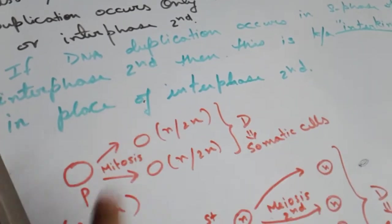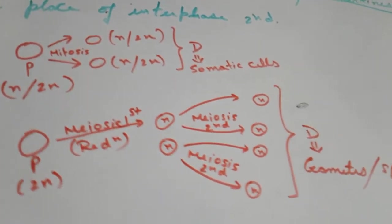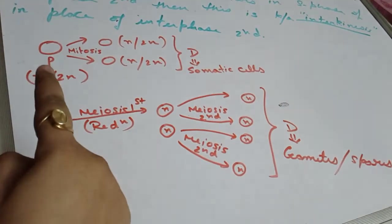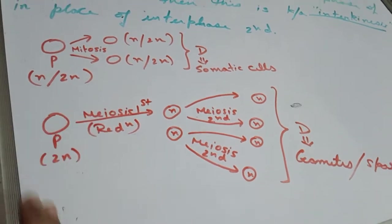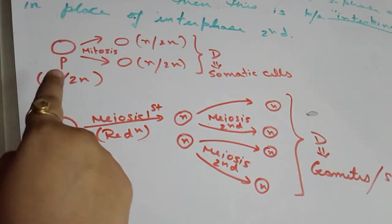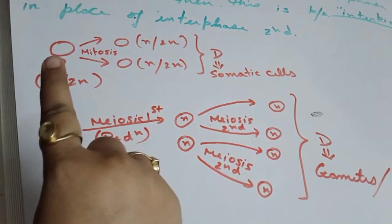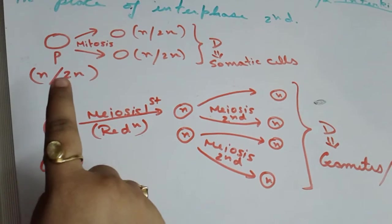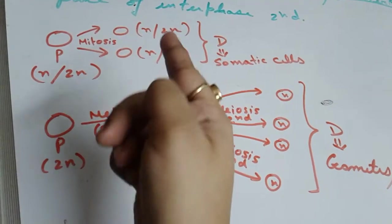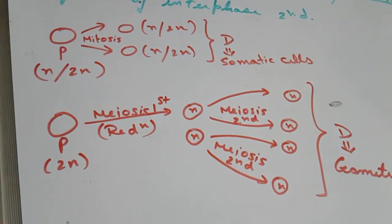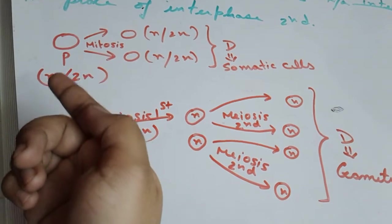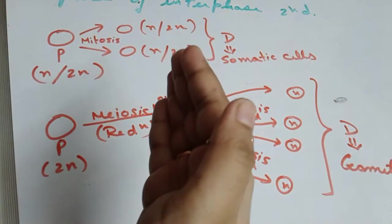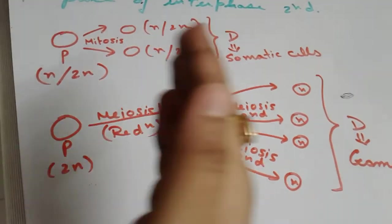Here is a small diagrammatic representation to make this point clear. This is the parent cell — P for parent. The ploidy level could be haploid (n) or diploid (2n). When the parent cell undergoes mitosis, that is equational division, two daughter cells are produced. The ploidy level does not change: a haploid parent produces haploid daughter cells, and a diploid parent produces diploid daughter cells.